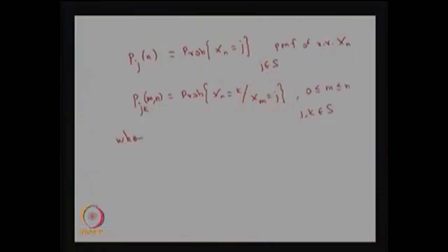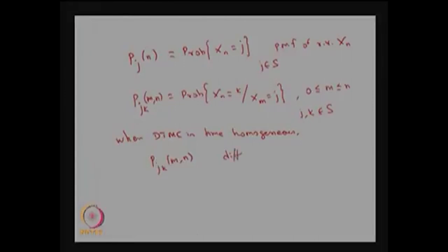When the DTMC is time homogeneous — that is, time invariant — the transition probability p_jk(m, n) depends only on the time difference n minus m. The actual time does not matter; only the time difference is important. Therefore, p_jk(m, n) depends only on n minus m.